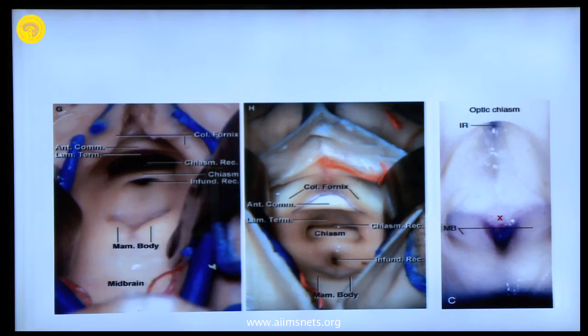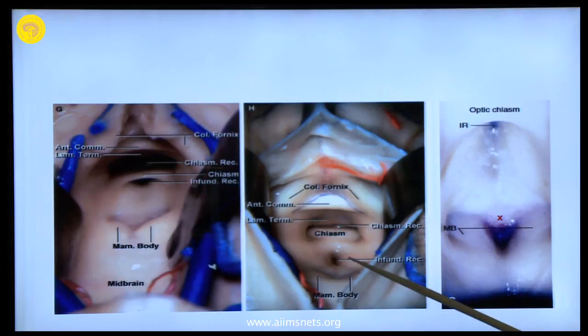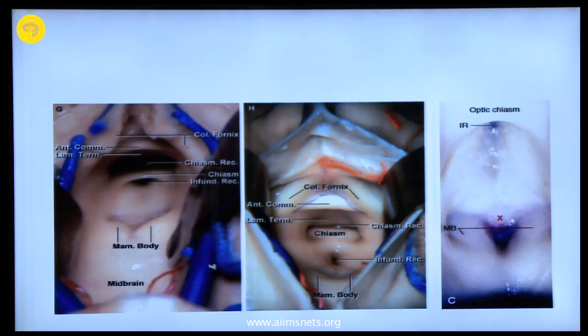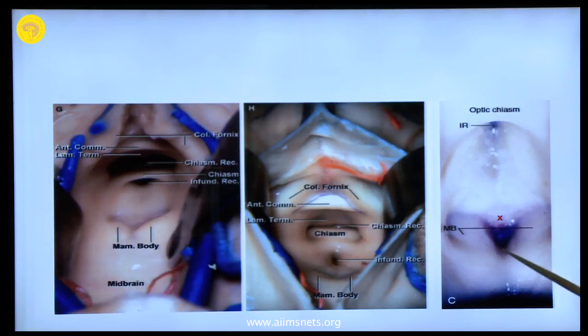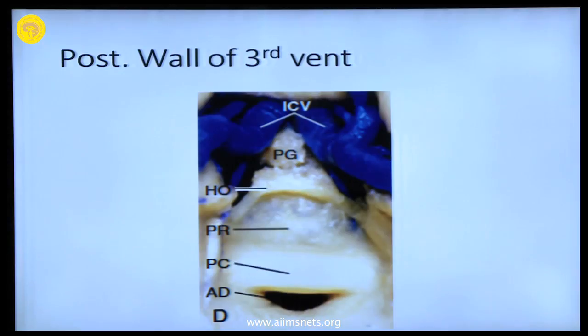This is how it looks like. The different recesses: infundibular recess, lamina terminalis, the chiasma. This is the endoscopic view of the infundibular recesses, mammillary bodies, and where you make a third ventriculostomy.